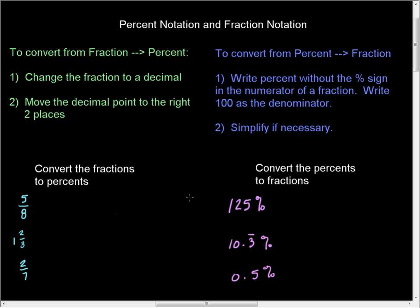In this video, we're going to convert percent notation to fraction notation and vice versa. The steps to go through when converting fractions to percents: first, change the fraction to a decimal by simply dividing them out. The second step is to move the decimal point to the right two places. If you have a repeating decimal, you want to take it out a couple of places before you move the decimal point.